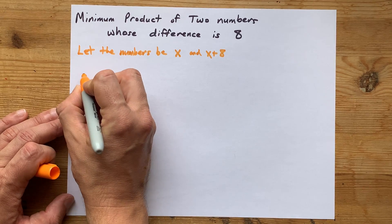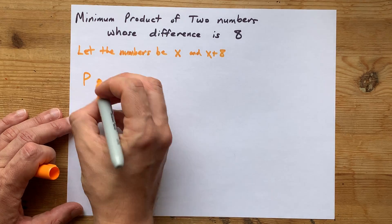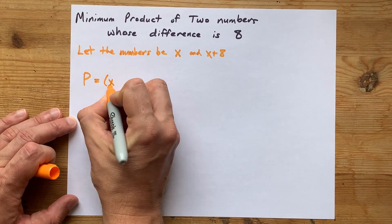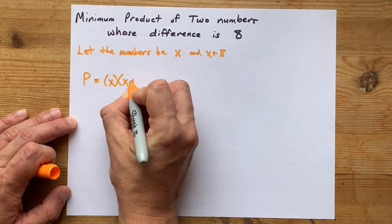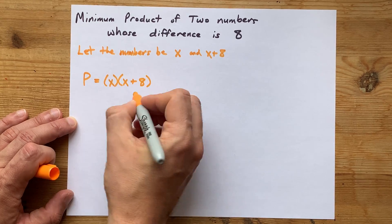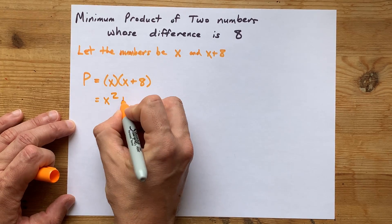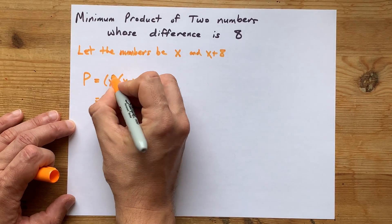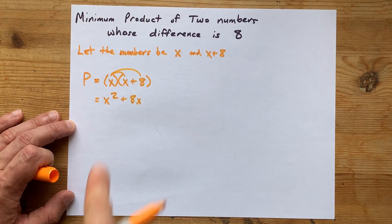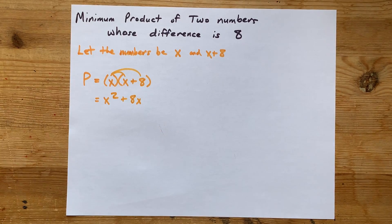Now we're being asked for what the product of those two numbers are. Well, we have x times the thing that differs from it by 8, and this gives us the equation of a parabola, x squared plus 8x, when you multiply that x through that second bracket.